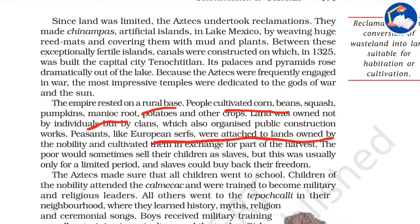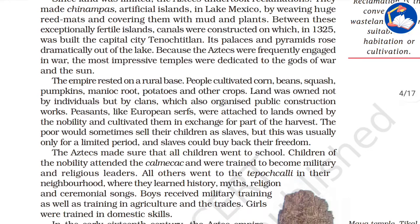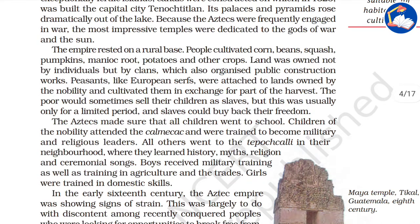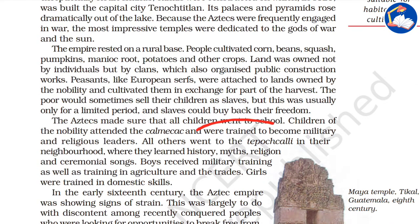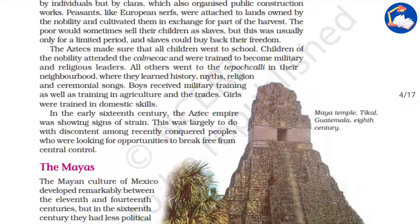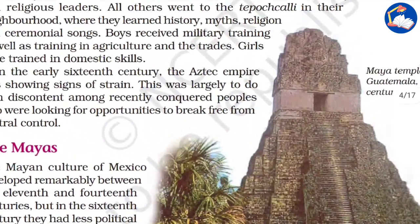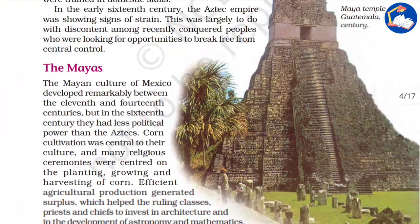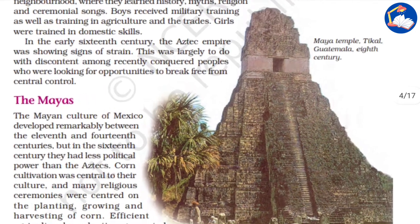The Aztecs made sure that all children went to school. Boys received military training as well as training in agriculture and trade, while girls were trained in domestic skills. That was their social structure.